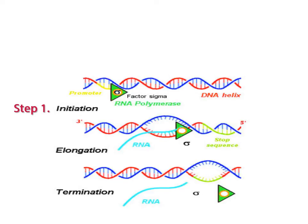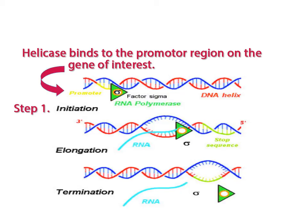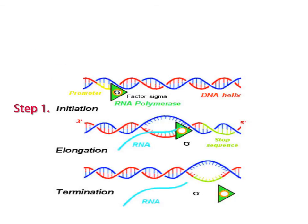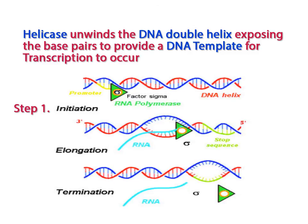Initiation begins when transcription factors, such as helicase, bind to the promoter region of the gene of interest on the DNA strand. The gene of interest is the genetic code on the DNA strand that codes for the particular protein the body is trying to produce. Once helicase binds to the promoter region, or starting point of the gene, the enzyme unwinds the DNA double helix, exposing the base pairs to provide a DNA template for transcription to begin.